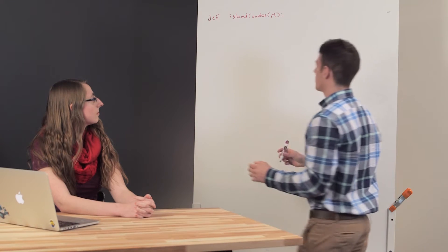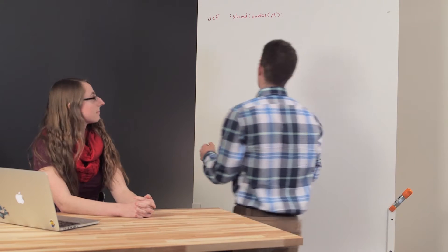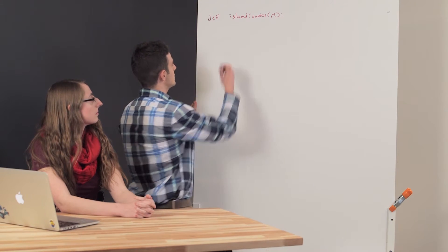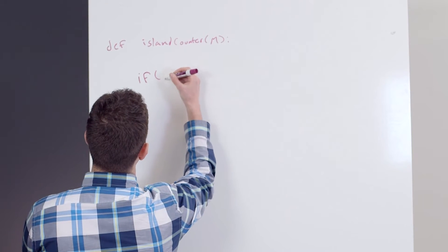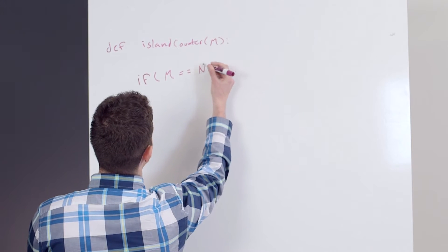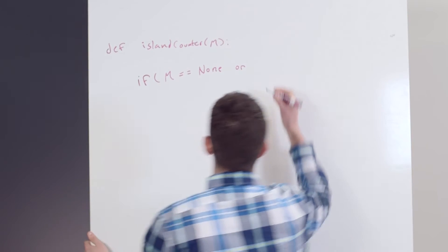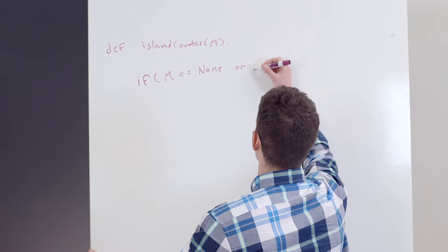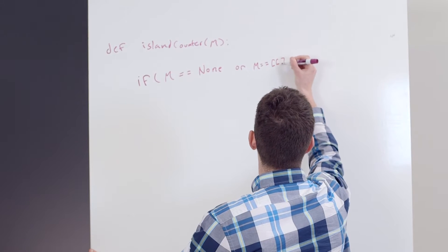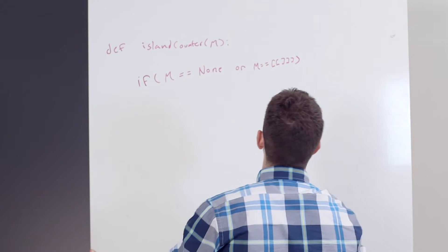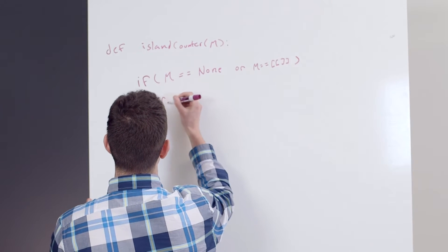So I'm going to call my main function numIslands and I'm taking in the matrix here. Now what I first want to account for is the none. So if my matrix is equal to none or if it is equal to the empty matrix, in this case I just want to return 0 right away.